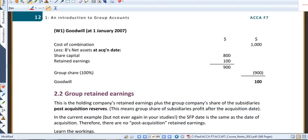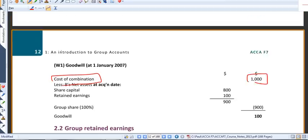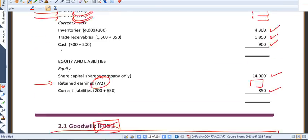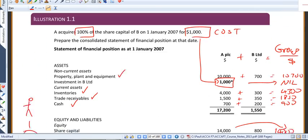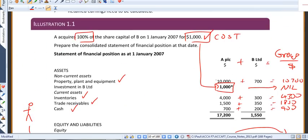Just over the page, you can see our first look at a goodwill calculation. This uses the data from A and B. We start with the cost of the combination. This is simply what we paid once upon a time to buy the shares in B.